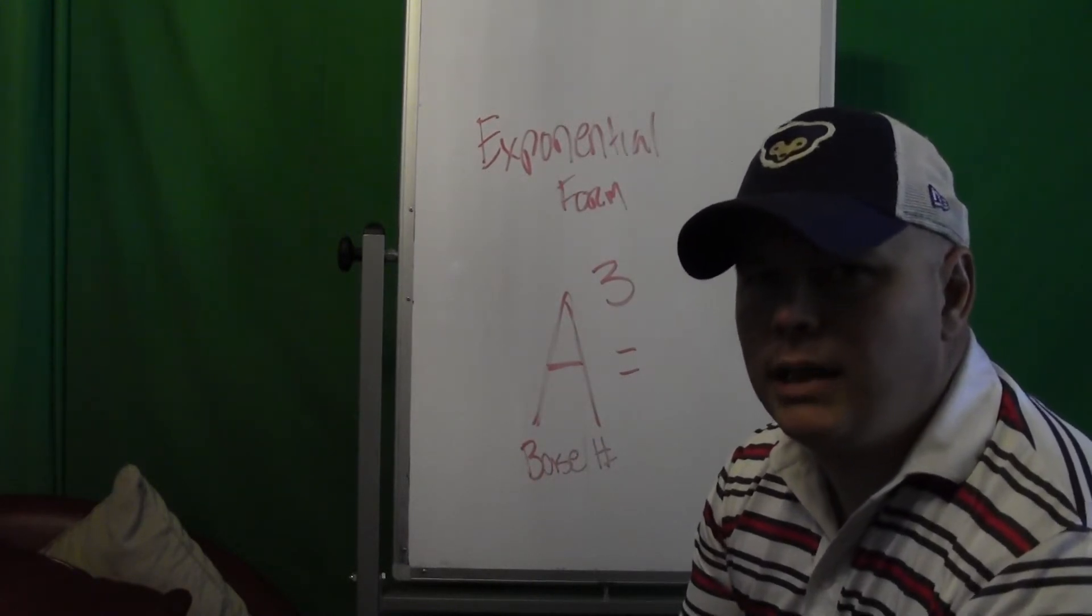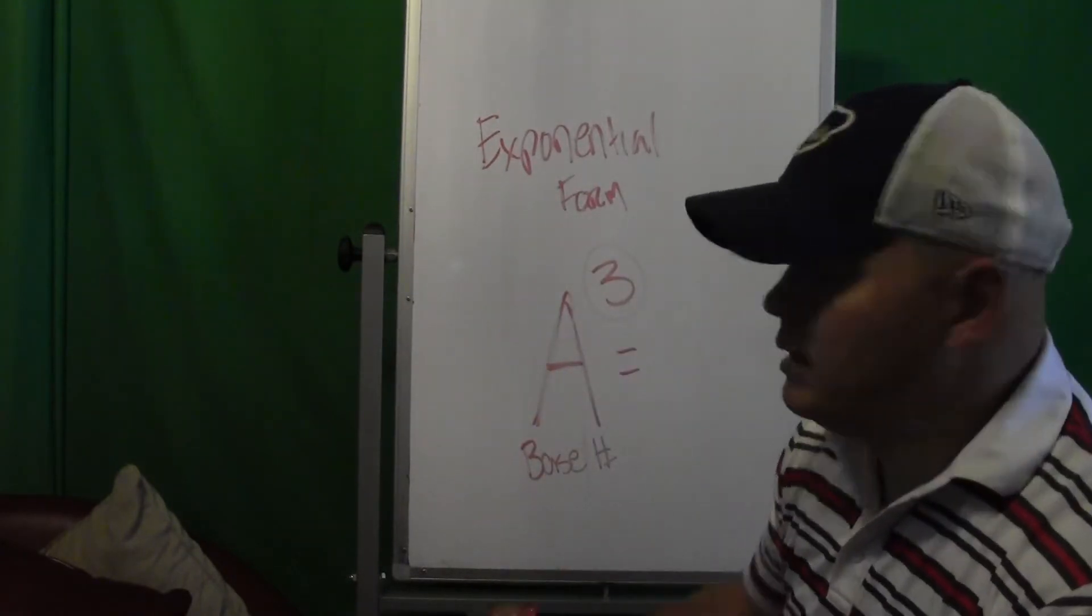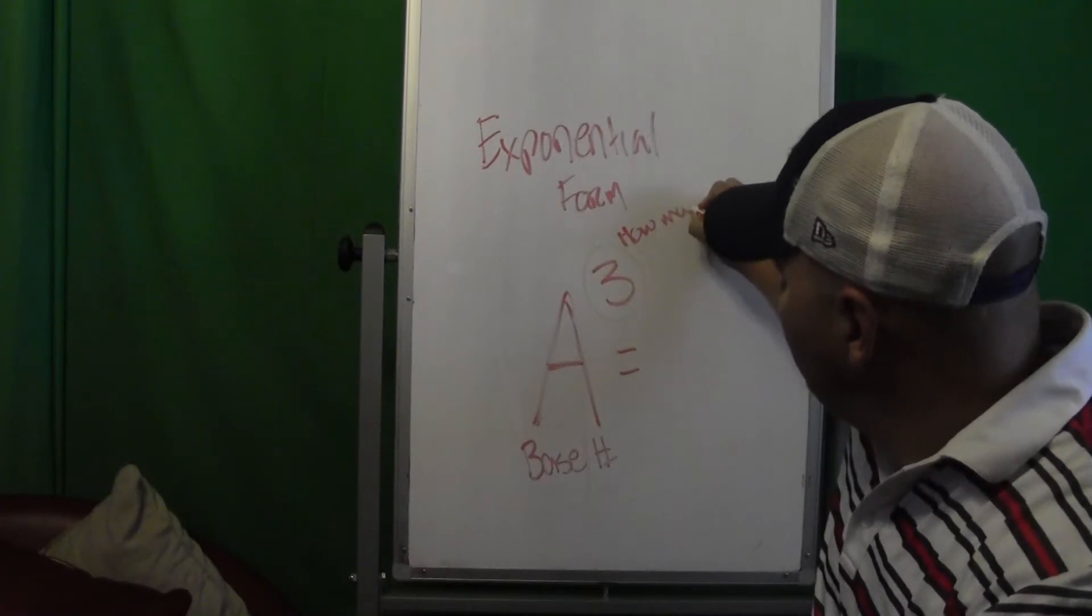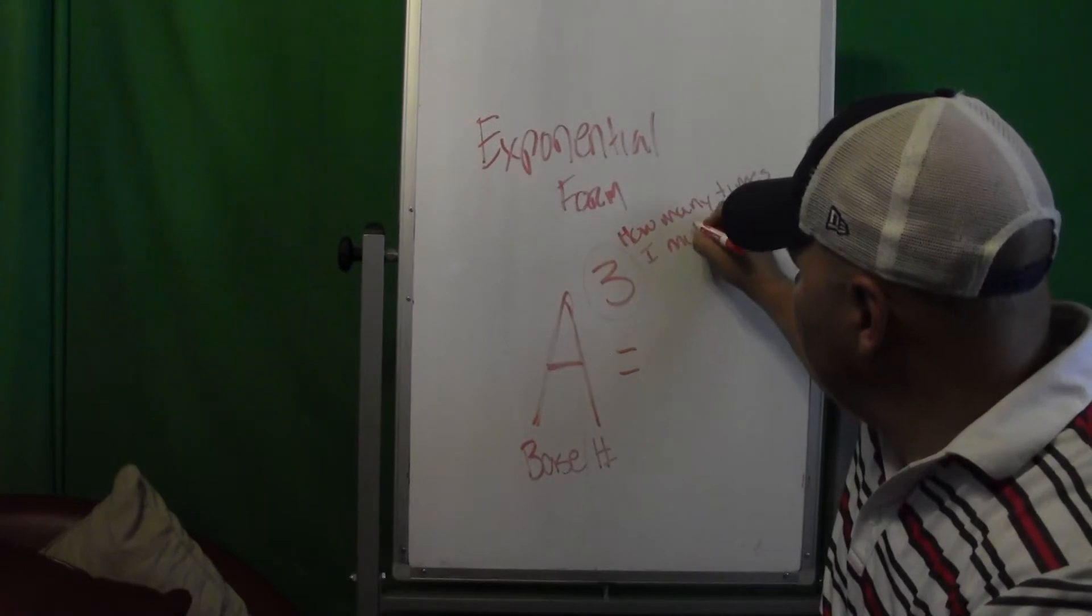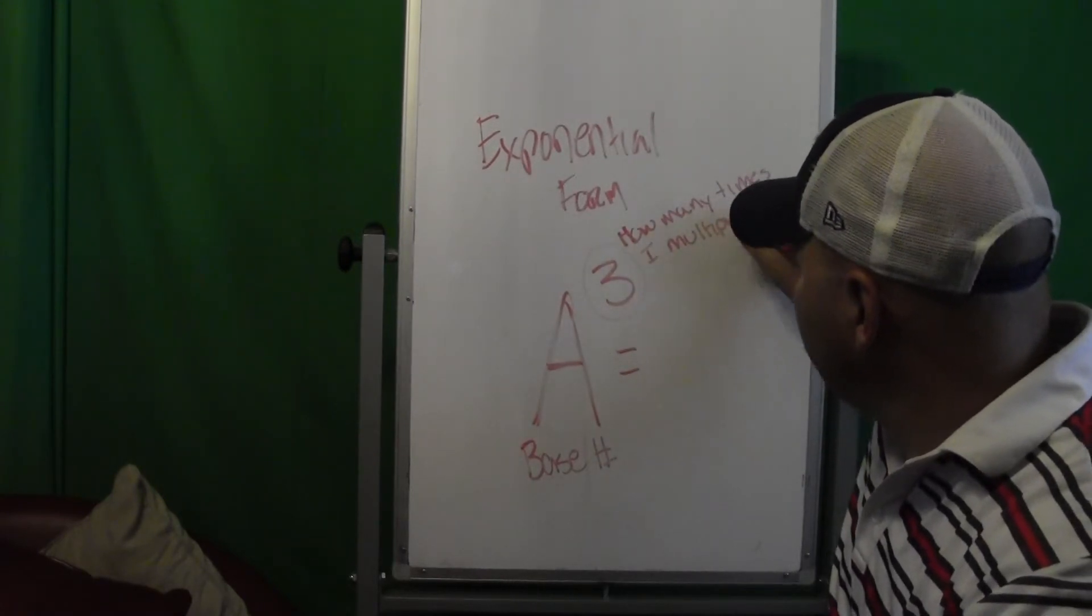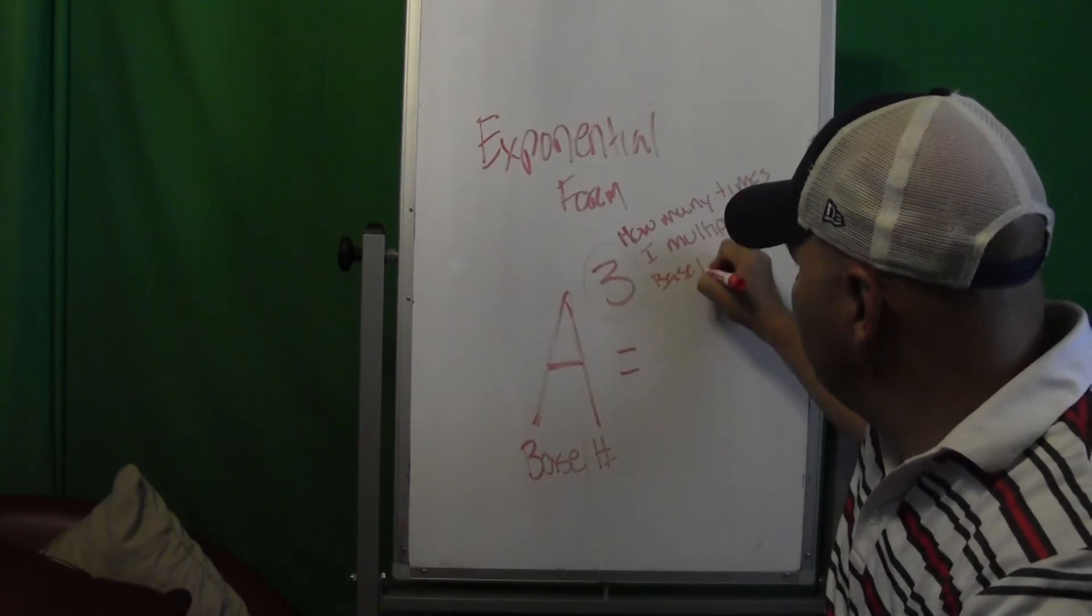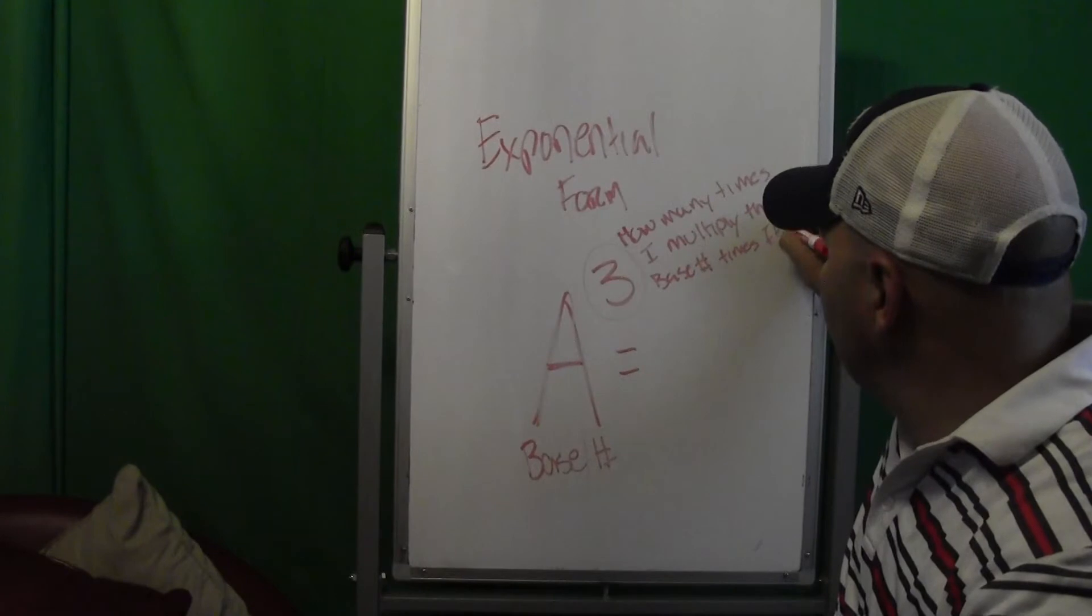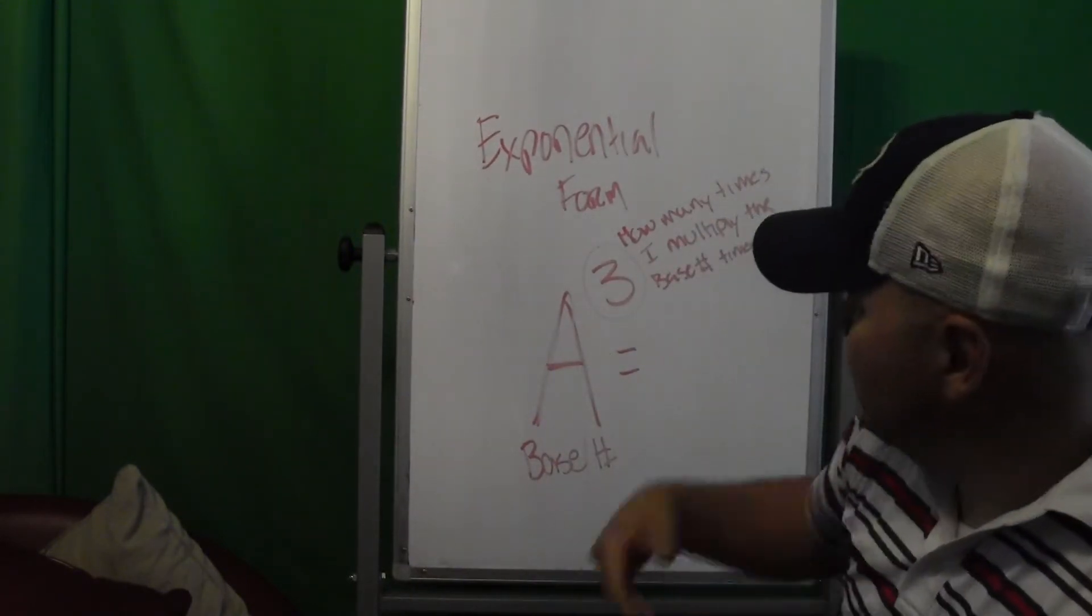And this is my exponent, and that tells me how many times I multiply the base number times itself. That's an important distinction. I'm not saying it doesn't say a times 3.